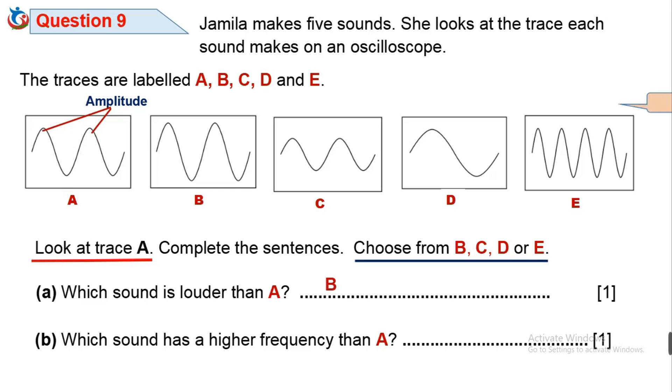Amplitude is the maximum distance moved by a point on a wave. The higher the amplitude, the greater the loudness of the sound. So the only trace with higher amplitude than trace A is trace B. So trace B will be the loudest.